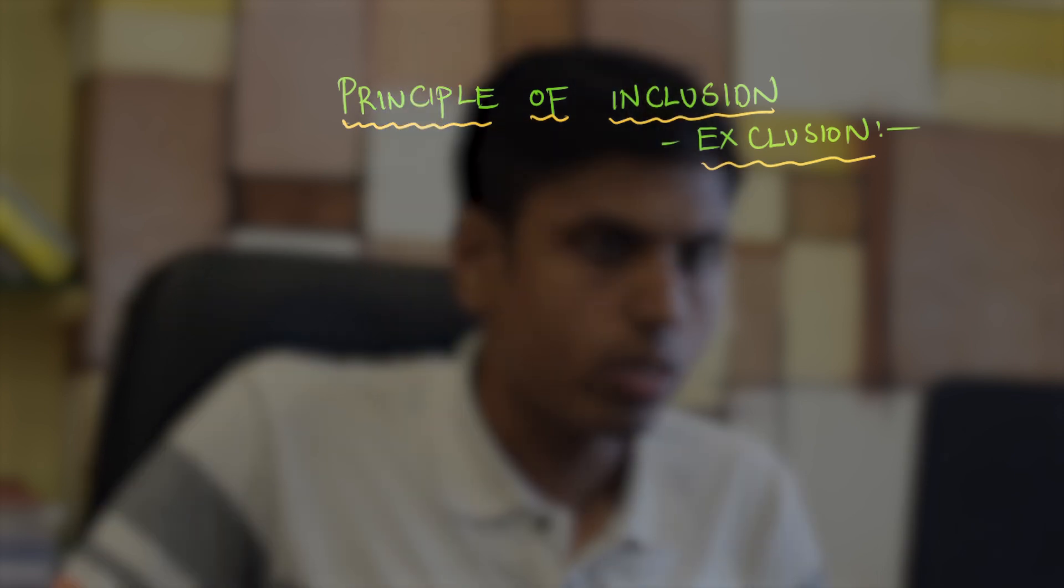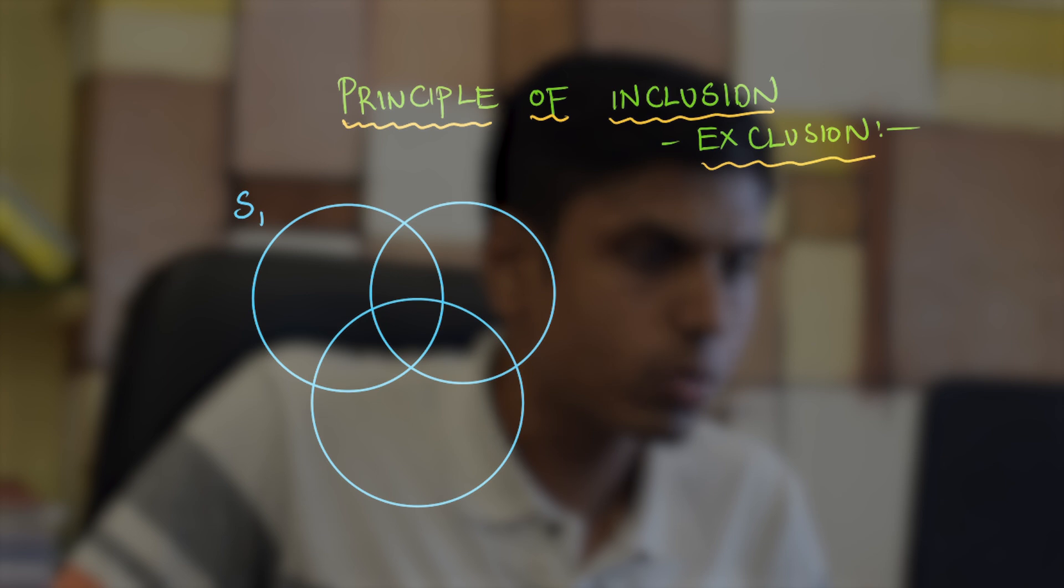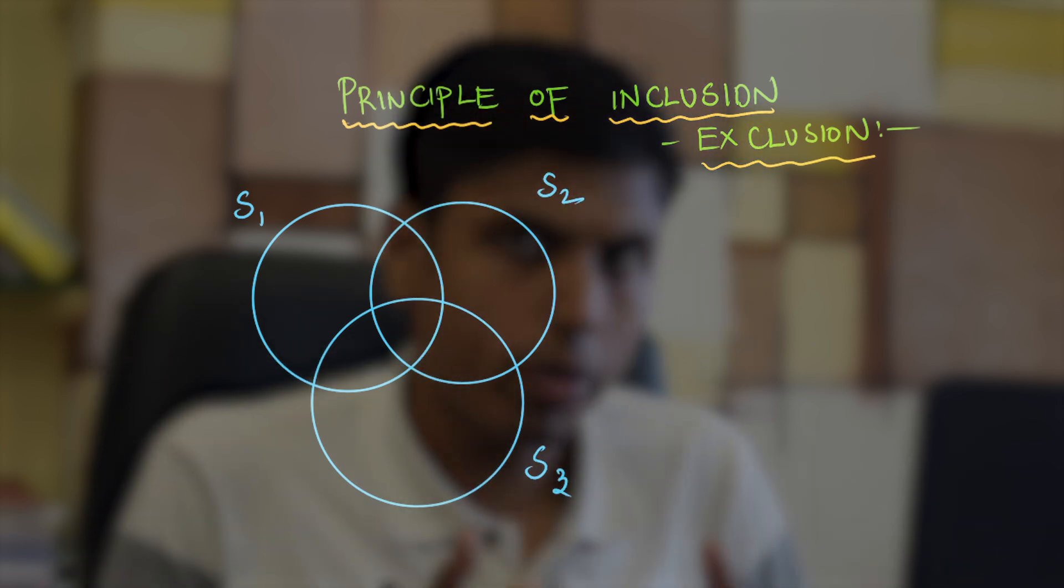Principle of inclusion exclusion talks about a simple counting technique. Let's see a diagrammatical approach towards learning this. Let's draw some Venn diagrams in order to represent a set. So here there are three sets. Let's call them S1, S2, and S3, and of course they share some common elements.